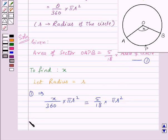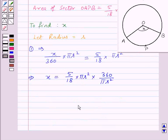So this implies X is equal to 5 by 18 into pi R squared multiplied by 360 upon pi R squared. So the value of X will be 100 degrees. Thus X equal to 100 degrees is the required answer.